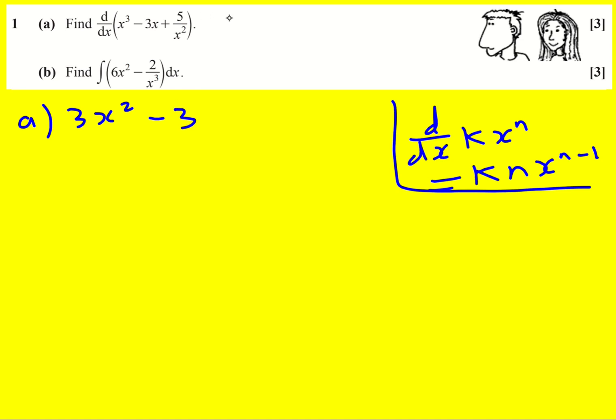Now I'm going to rewrite this one as 5x to the minus two. I probably should have done that in a line below, but as long as I make it clear. I'm going to bring the power down, so it becomes minus 10x to the minus three.